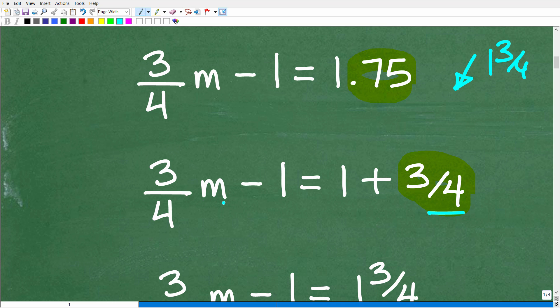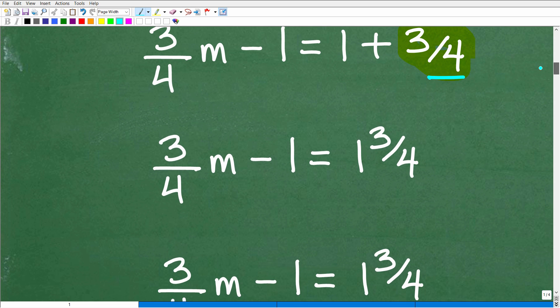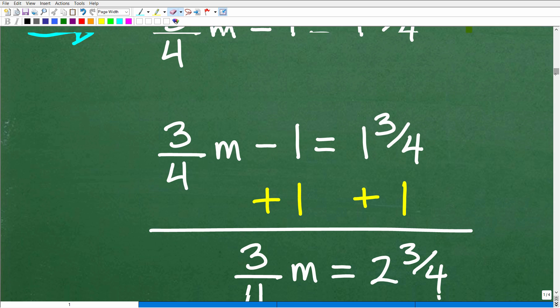So we have 3/4 m - 1 = 1 + 3/4, which of course is the same thing as 1 and 3/4. So now, finally, we have an equation here all in fractions. All right, so what do we need to do? Well, when you're solving an equation, a basic linear equation in algebra, what you want to do is get all your variable terms on the left-hand side. So you can see here the only variable term we have is 3/4 m. It's already on the left-hand side, but you want to get all your numbers on the right. And here we have this -1. We need to get that over to the other side of the equation. So how do we make that happen? Well, let's go and take a look at that right now.